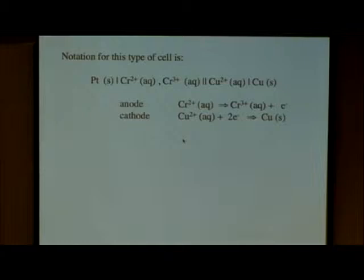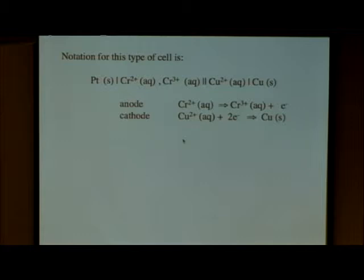Let's think about how we would actually write this down. The notation for this type of cell: we have the platinum, which indicates the electrode. A single line indicates a phase boundary. Then in solution you have chromium plus 2 and chromium plus 3 — both aqueous, so they have a comma between them. That's one beaker, representing the reaction at the anode. Then we have a double bar indicating the salt bridge, and in the other beaker, copper plus 2 aqueous and copper solid separated by a single line for the phase boundary.